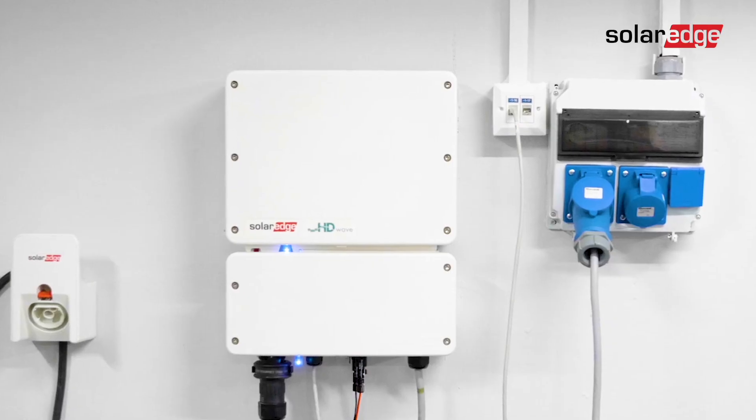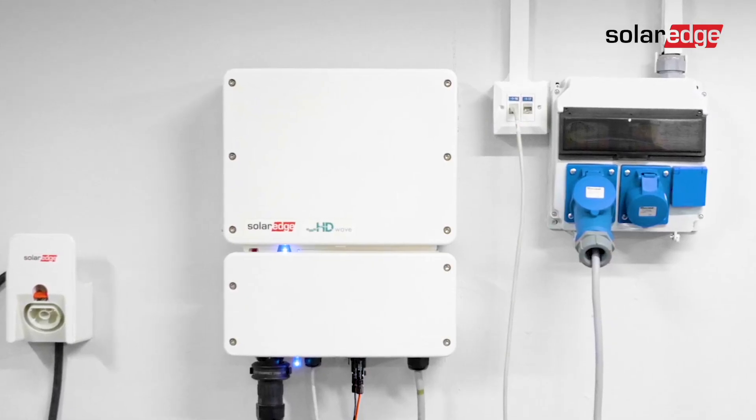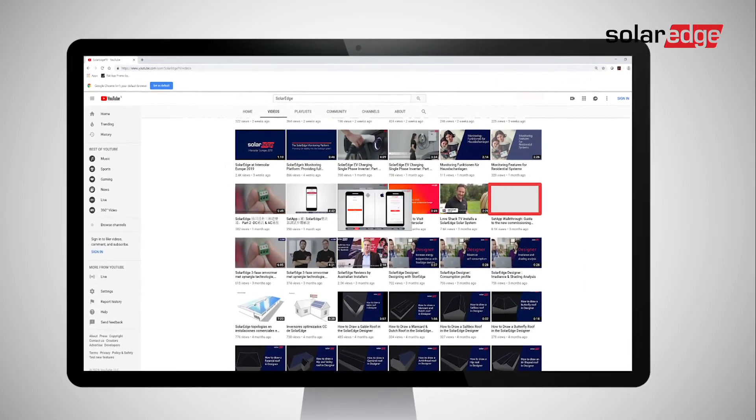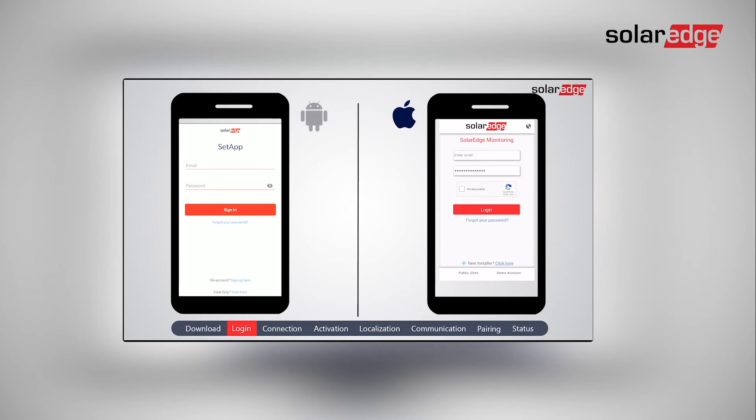That's it. You're all done. The inverter is now connected to DC, AC and communication. For commissioning the installation, please use the setup walk-through movie.